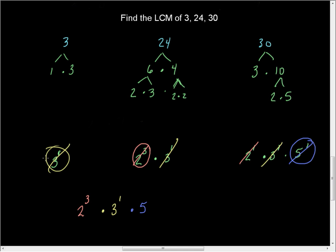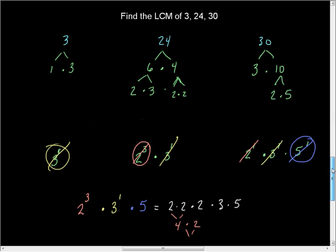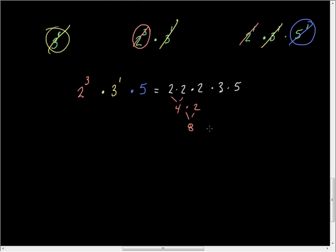So now I can go ahead and multiply this out, which is step 4. This becomes 2 times 2 times 2 times 3 times 5. 2 times 2 is 4 times 2 is 8 times 3 is 24 times 5. And now this is a tough one, but 20 times 5 is 100, 4 times 5 is 20, so it's 120.